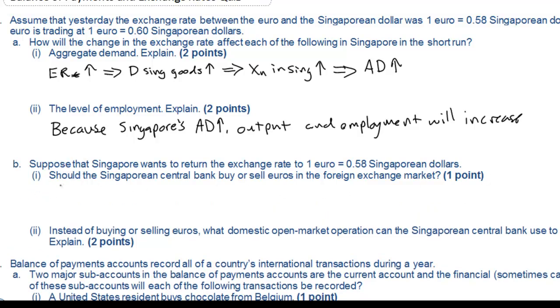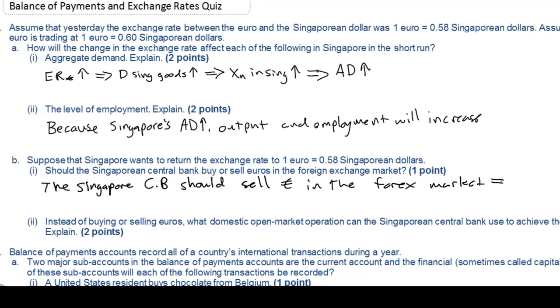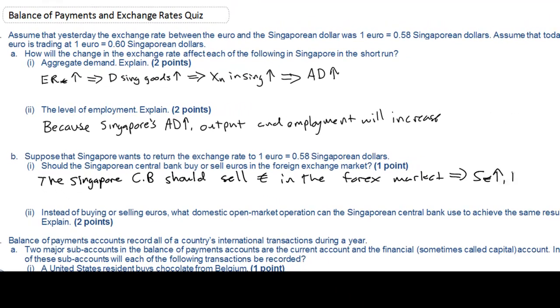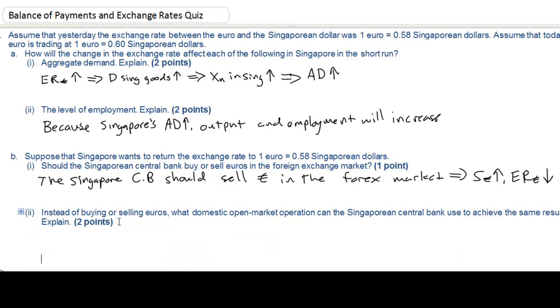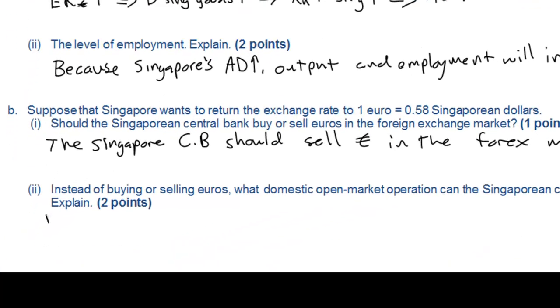So the next question asks us to suppose what happens if the Singapore central bank wants to return its exchange rate to 0.58 Singapore dollars per euro. Should the central bank buy or sell euros? The central bank essentially wants to devalue the euro once again since the euro was too strong in its opinion. Therefore the central bank should sell euros in the forex market increasing its supply and reducing the exchange rate.